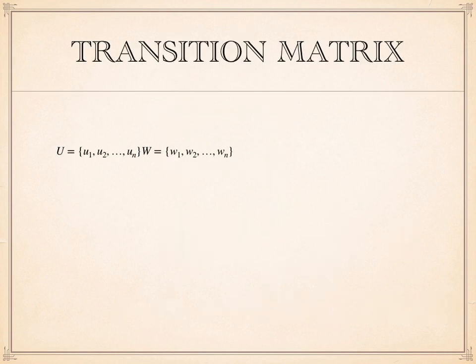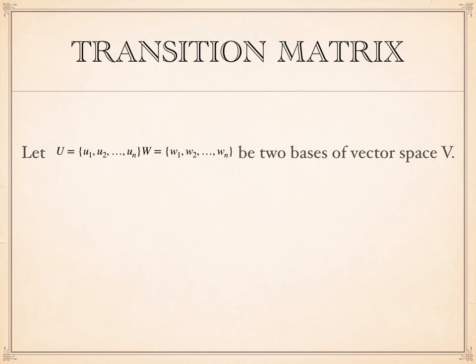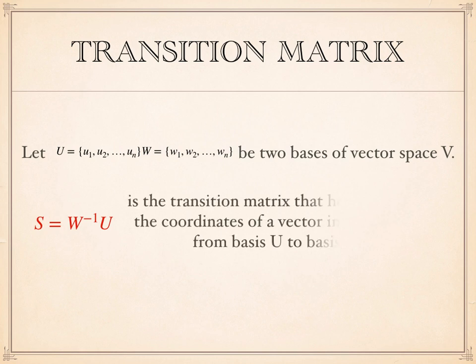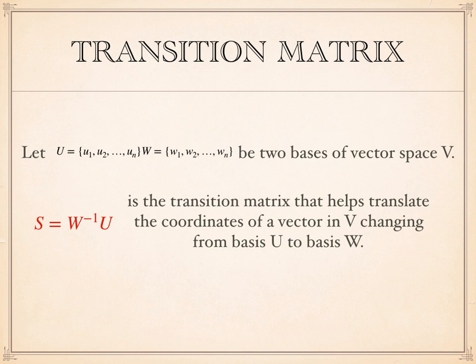To summarize the idea of changing from one basis to another and finding new coordinates with respect to a new basis: in general, if you have two sets of bases U and W of a vector space V, then S = W inverse times U is the transition matrix that translates coordinates from basis U to basis W. If you want to change from U to W, multiply the transition matrix S = W inverse times U by the old coordinates to get the new coordinates.